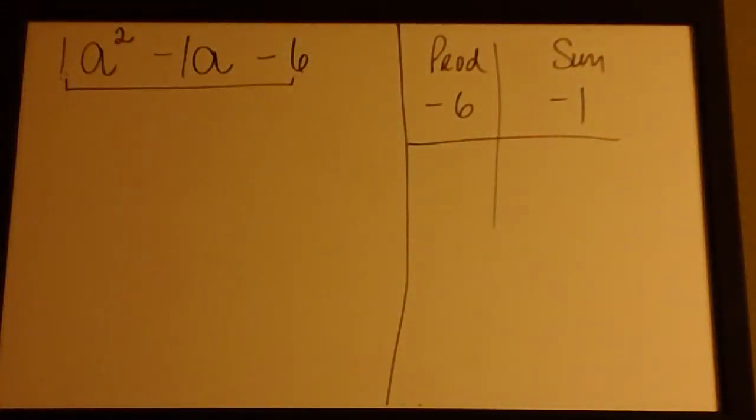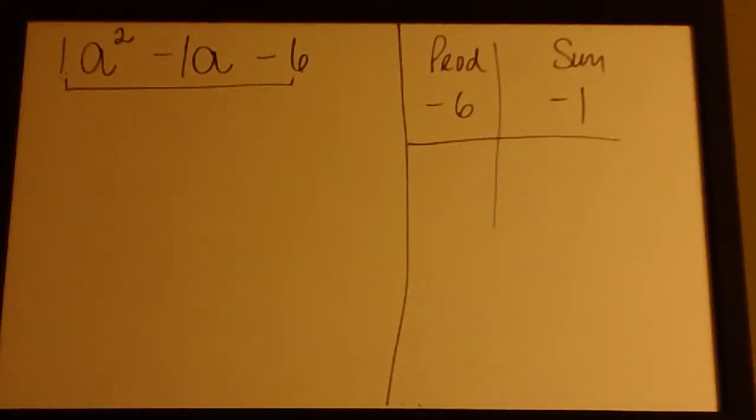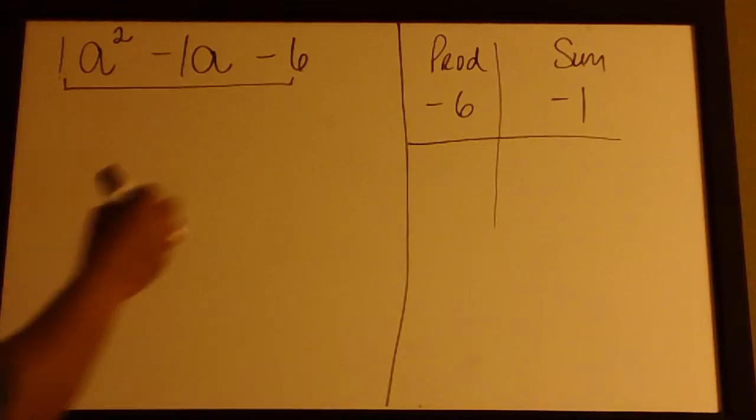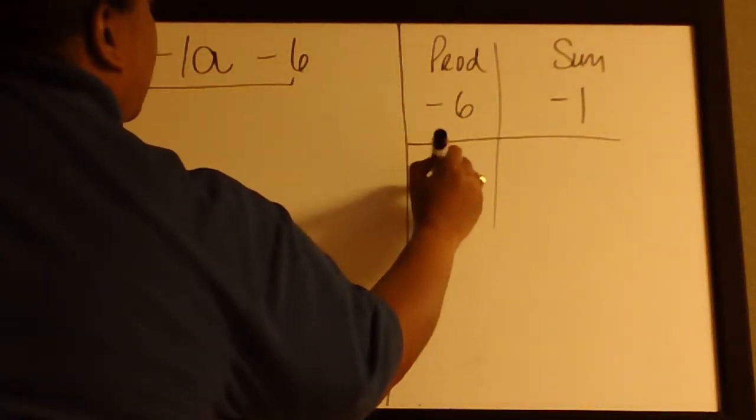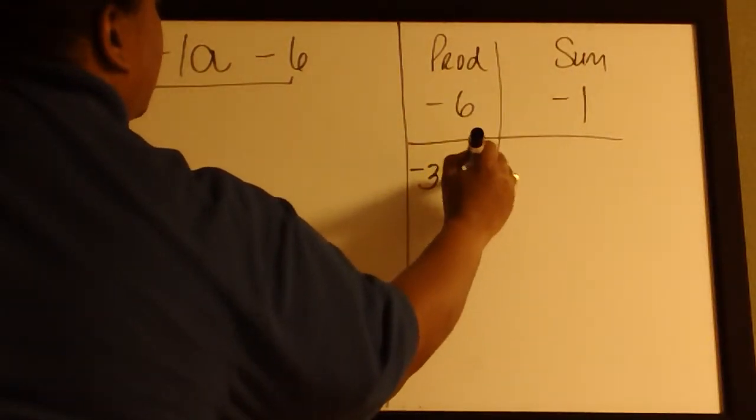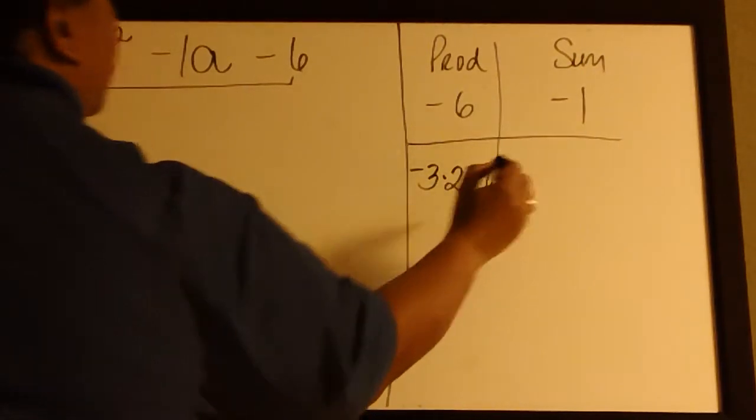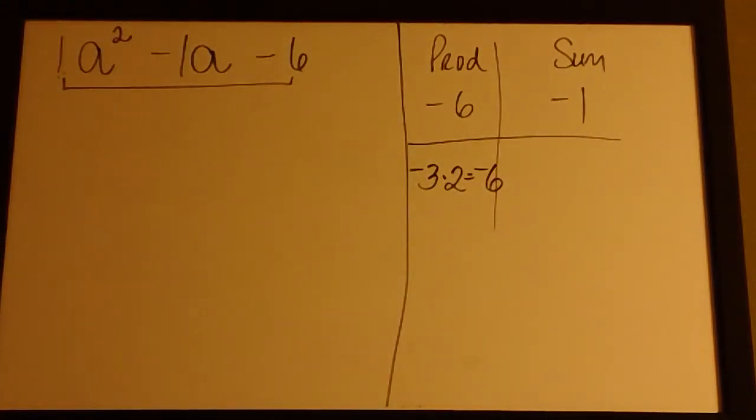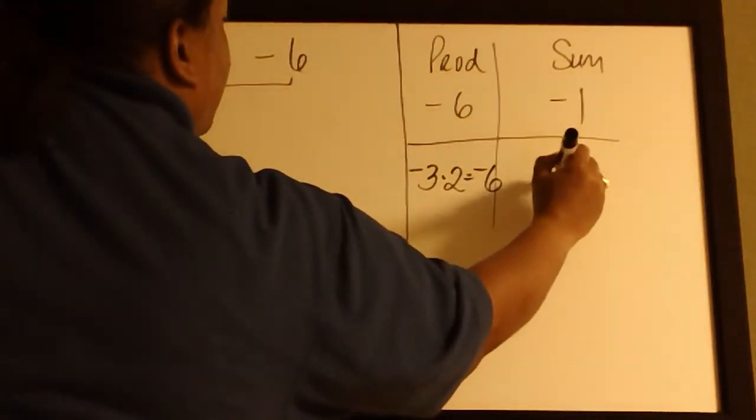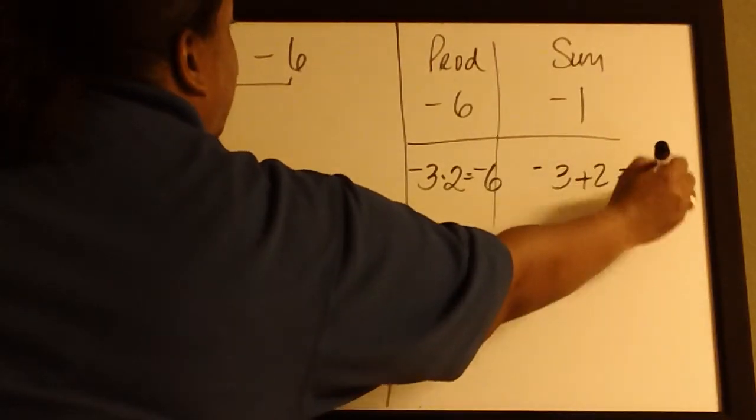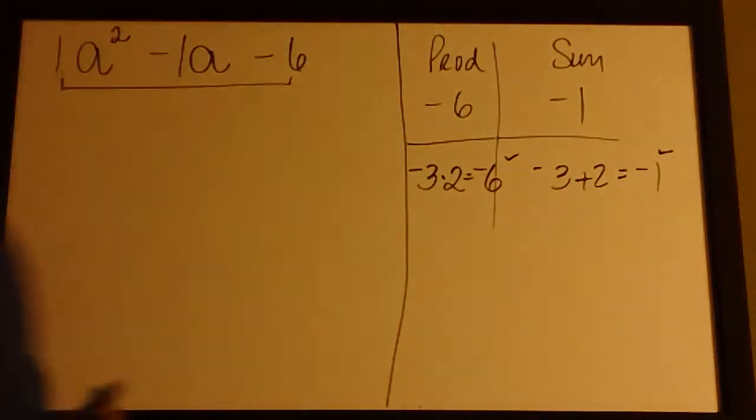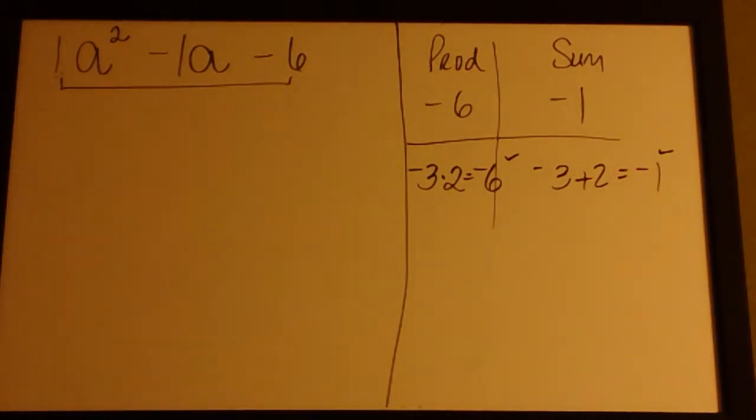but when we add those same two numbers we get -1. -3 times 2 gives us -6, and -3 plus 2 gives us -1, so -3 and +2 works out for us.